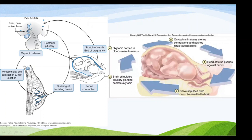Oxytocin also causes uterine contraction; as a result the cervix stretches, indicating the end of pregnancy. This stretching of the cervix and the end of pregnancy again activates the pituitary to release more oxytocin.